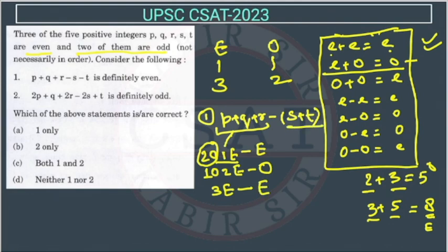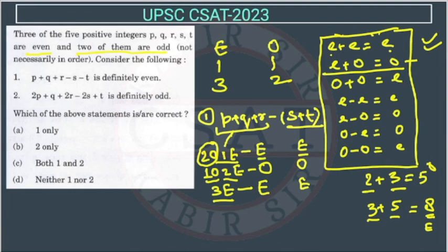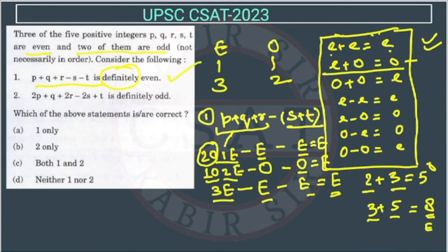Now for s + t: if we already used two odds in p+q+r, then s+t are both even, so even minus even gives even. If one odd was in p+q+r, then one odd remains for s+t, giving odd plus even = odd, and odd minus odd gives even. If both odds are in s+t, odd plus odd gives even, so even minus even gives even. In all cases we get even, so the first statement is definitely even — it is correct.